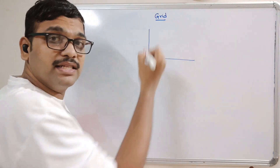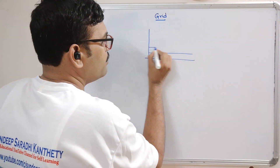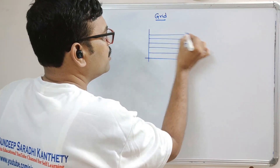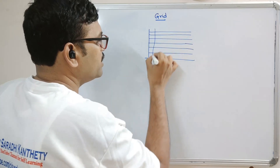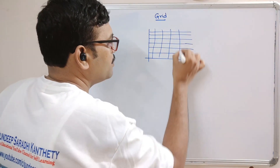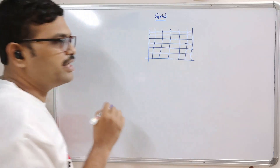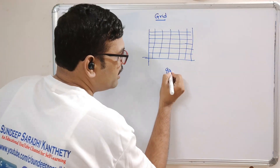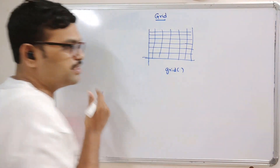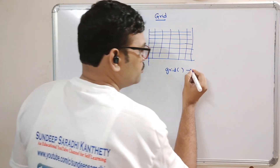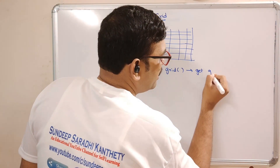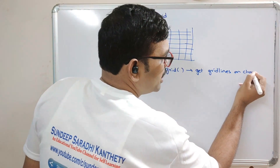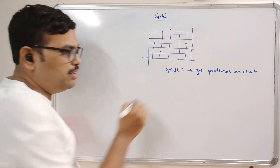If you apply this grid function, the complete horizontal lines and vertical lines will be displayed — the grid will be displayed. For getting these grids on the chart, we have to use the grid function. This grid function is used to get the grid lines on the chart.